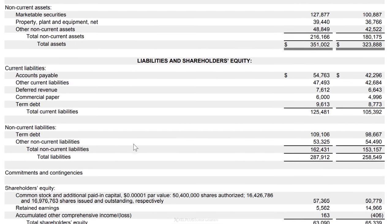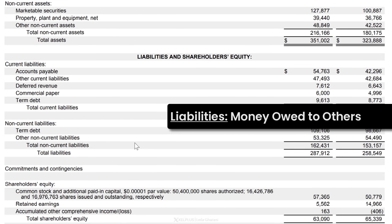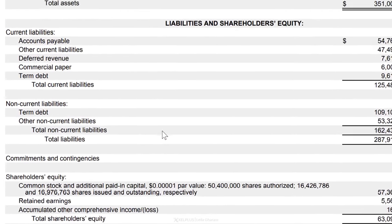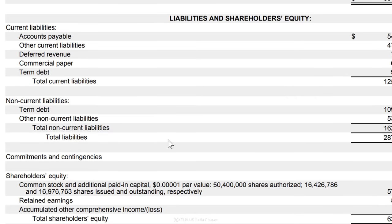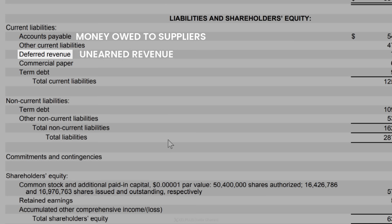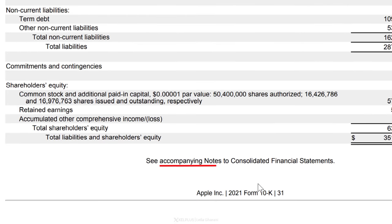Next are liabilities — the money that Apple owes to others. Just like assets, there are current and non-current liabilities. Current is everything expected to be paid by Apple in the next 12 months: accounts payable (the money owed to suppliers), other current liabilities, deferred revenue — also called unearned revenue, which is when Apple already received payments but hasn't delivered products or services yet — and commercial paper, which is a way of financing. You can check the accompanying notes for more details about each position.